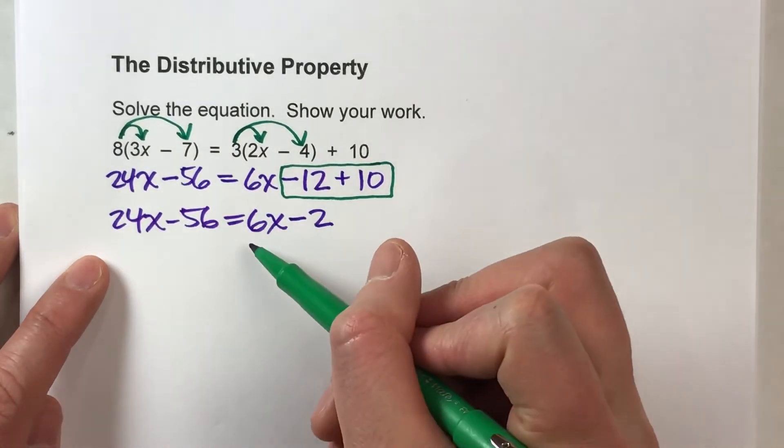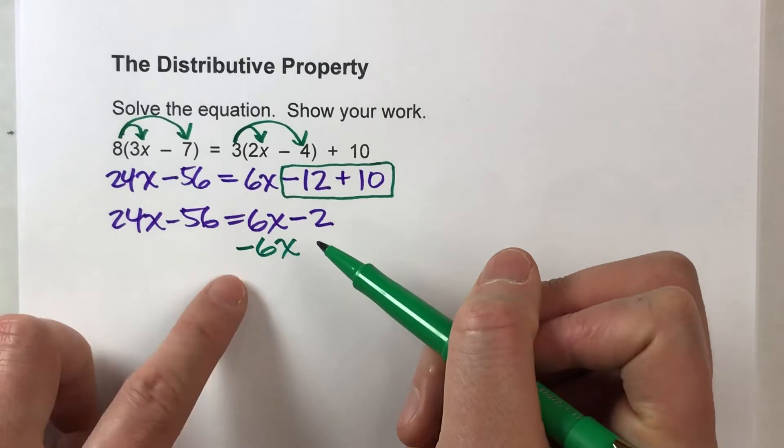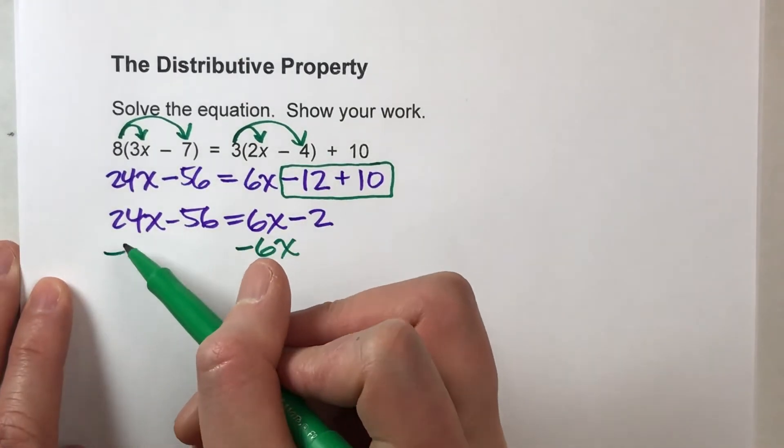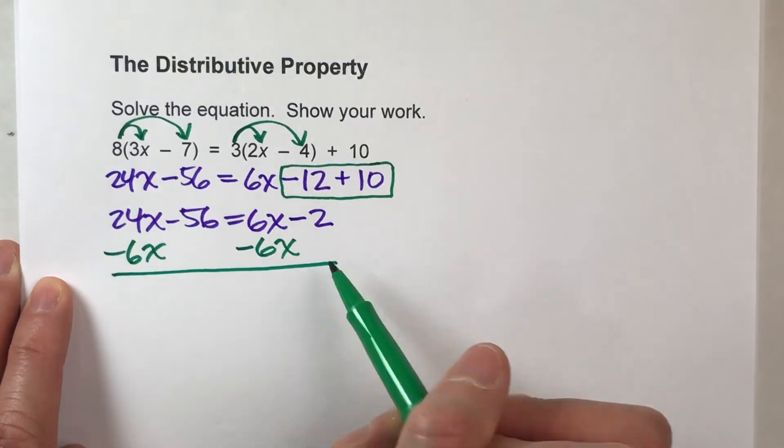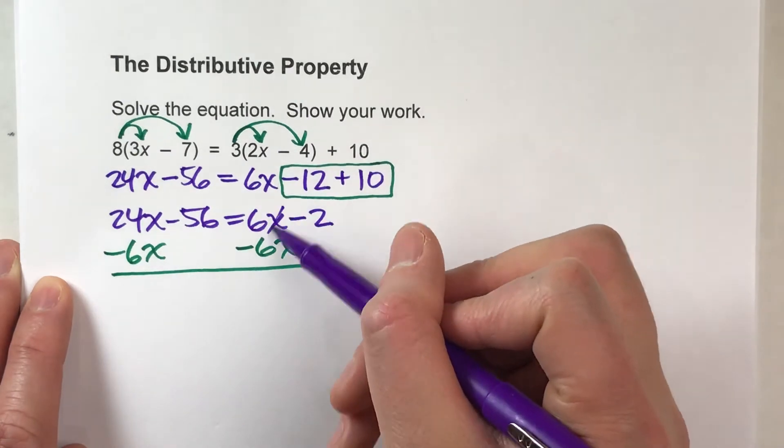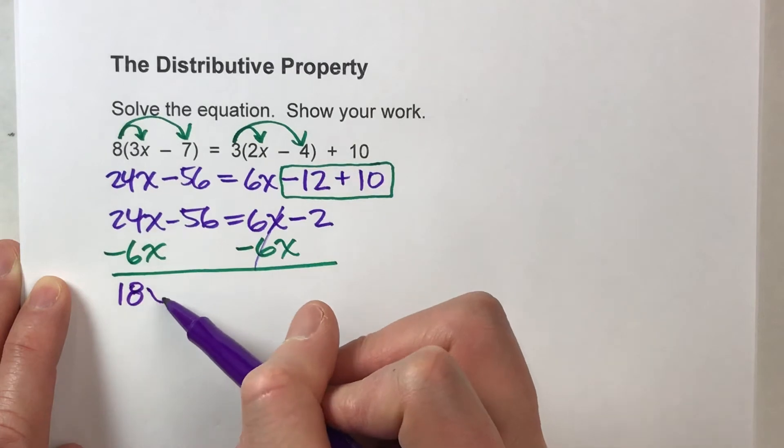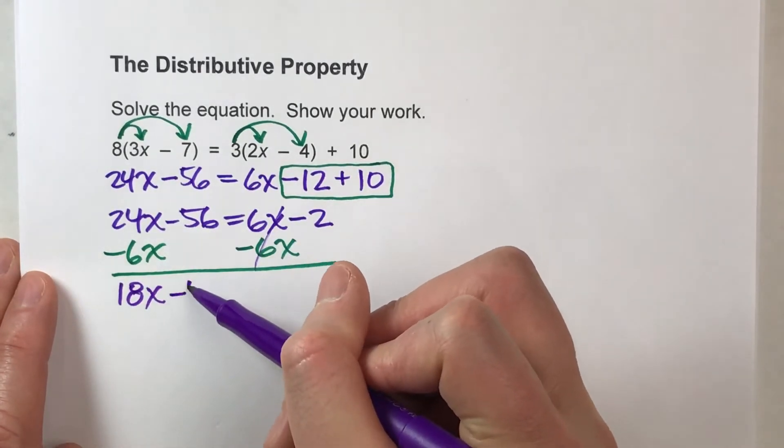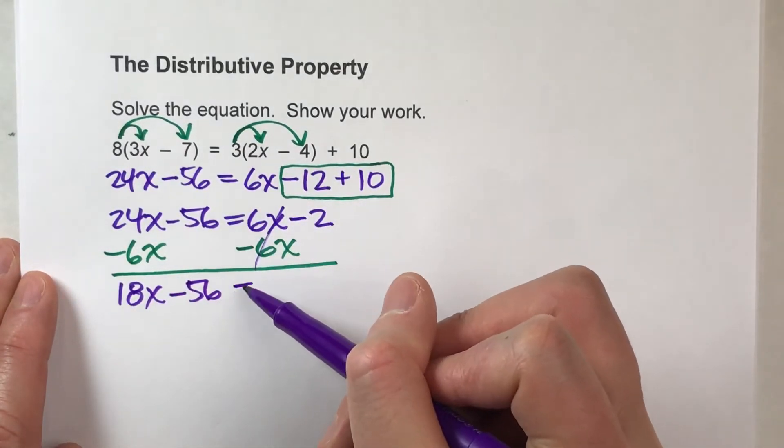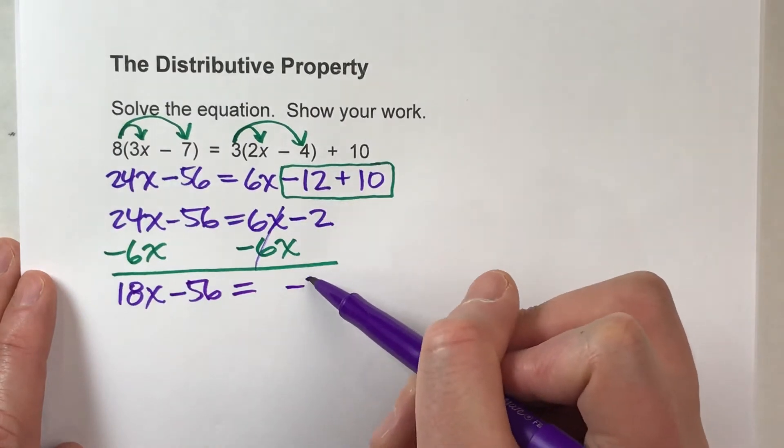I've got x on both sides, so I'm going to get rid of all the x's over here. What I do to one side, I have to do to the other. When I do that, the x's over here undo each other. But 24x minus 6x gives me 18x, the minus 56 drops down, the equals drops down, and the negative 2 drops down.